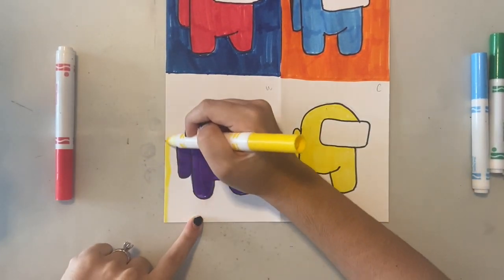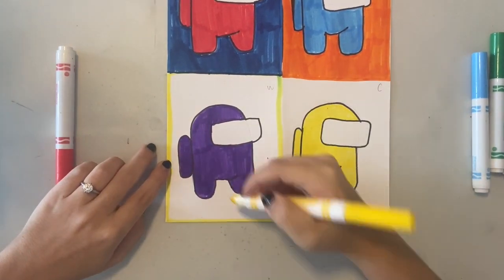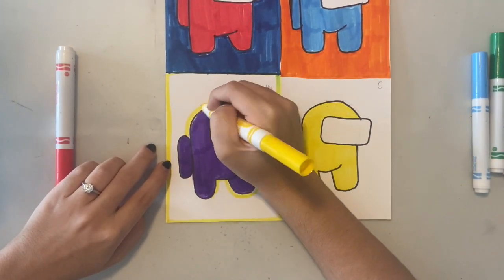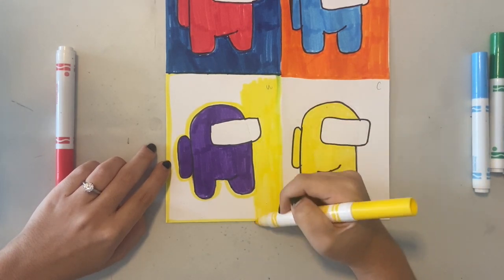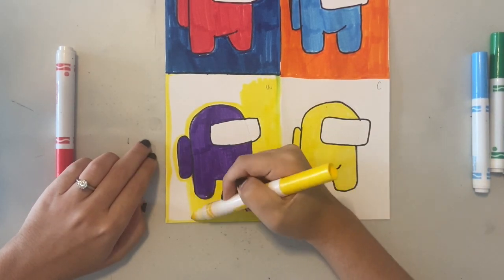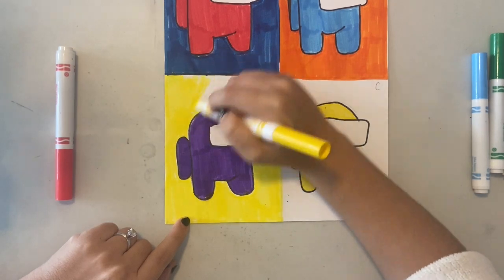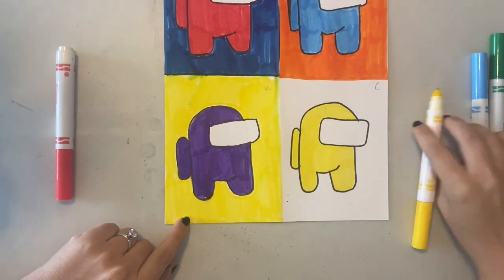Again, for my purple character, purple is a cool color, so I'm using a warm color, which is the opposite of cool, like yellow, for my background. I could have used any warm color, like red or orange, as long as it was a warm color.